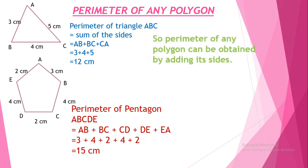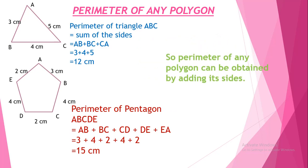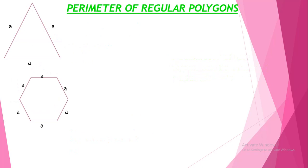So the perimeter of any polygon can be obtained by adding its sides. Next we find the perimeter of a regular polygon. A polygon in which all sides are equal is called a regular polygon. This triangle with equal sides is an example — we also call it an equilateral triangle. The perimeter of an equilateral triangle is given by a + a + a, that is 3 × a, or 3 × side.